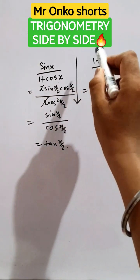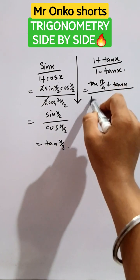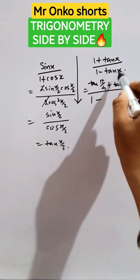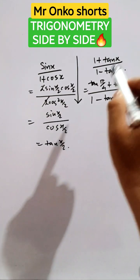Now in this case it will be 1 will be managed as tan pi by 4 then it is plus tan x divided by 1 minus. Now it is 1 into tan x. So 1 will be substituted with tan pi by 4 into tan x.